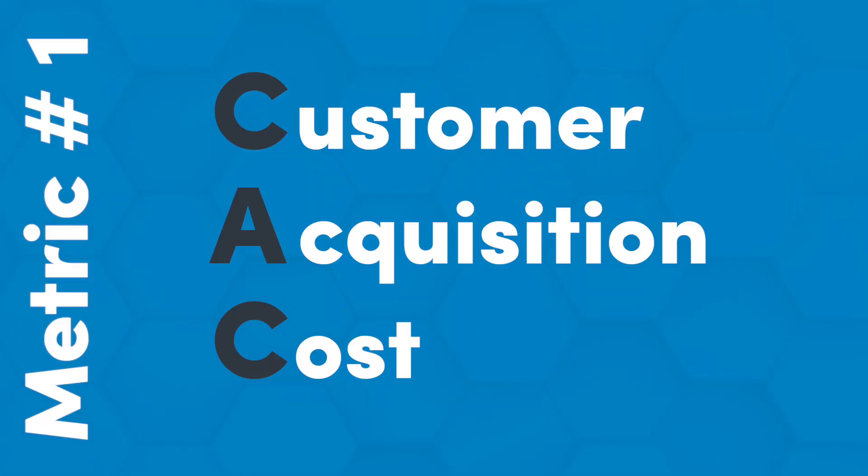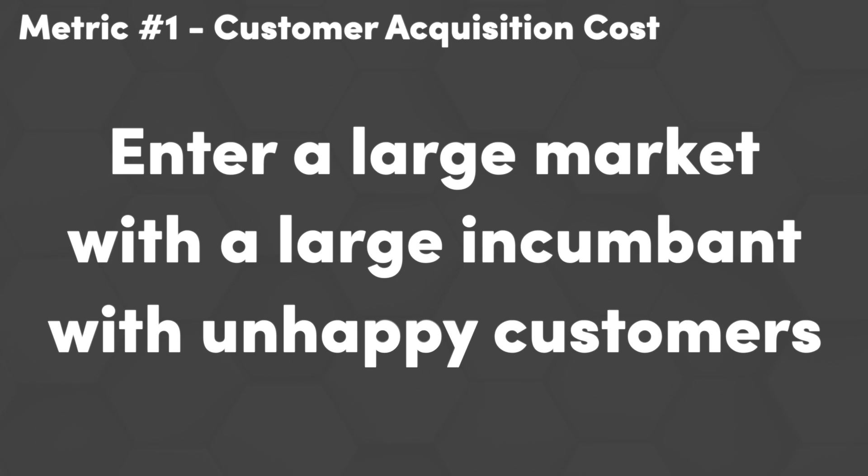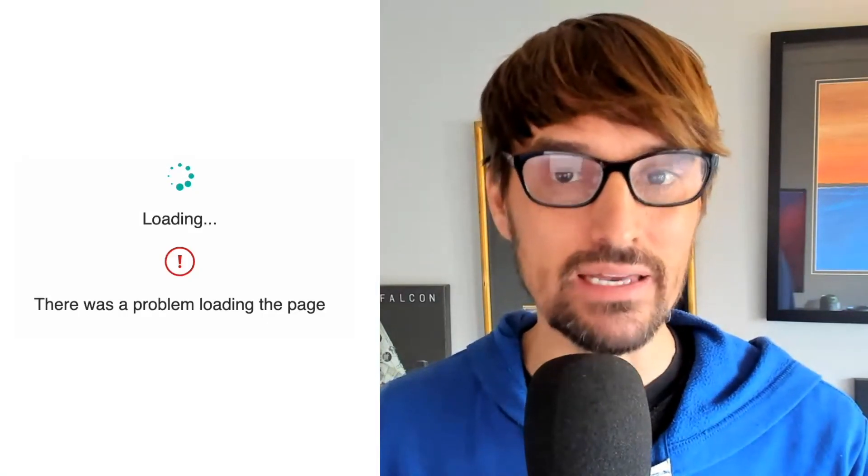The first one is the cost to acquire a customer, often pronounced CAC. This number you want to be low. One way to have a low CAC is to enter a large market with a large incumbent where people are looking to switch away. Maybe that incumbent has raised their prices so much that people don't feel like they're getting the value. Maybe the product is really buggy or the sales process is annoying and people have a bad taste in their mouth.